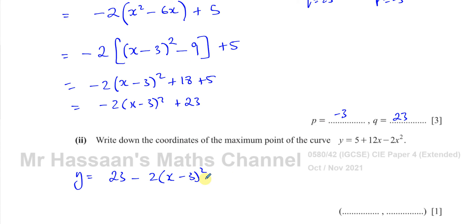Now, when something's in this form, when a quadratic equation is in this form, you can write down the coordinates of the vertex. In this case, it's going to be a maximum point because this is a curve that opens downwards because the x² term has a negative.